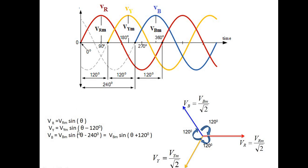Now I am showing these voltages in terms of a phasor diagram. While drawing the phasor diagram, we consider the reference voltage Vr first, using the RMS value: Vr = Vr_max / √2. Then Vy is at 120° from Vr, and Vb is at 120° from Vy. This is the phasor representation of all 3 phases.